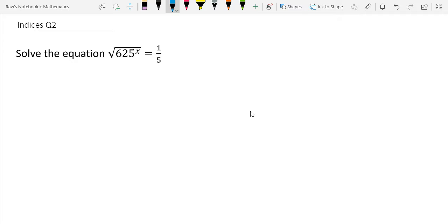Hi, let's solve this equation which says root 625 to the power of x equals 1 over 5.